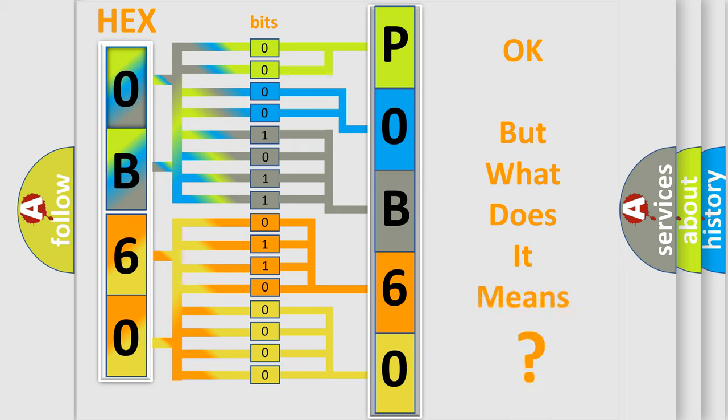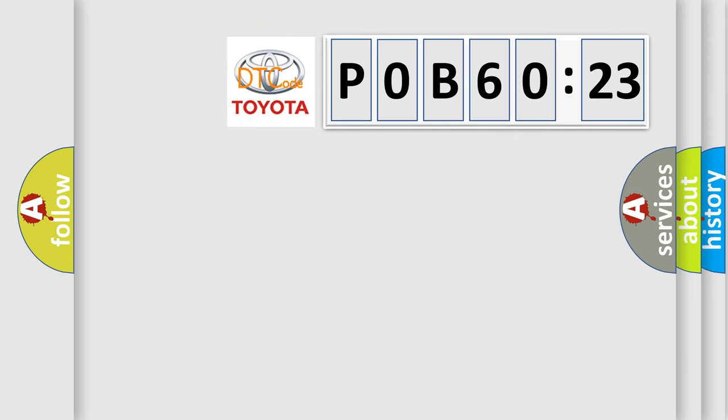The number itself does not make sense to us if we cannot assign information about what it actually expresses. So, what does the diagnostic trouble code P0B60123 interpret specifically for Toyota car manufacturers?